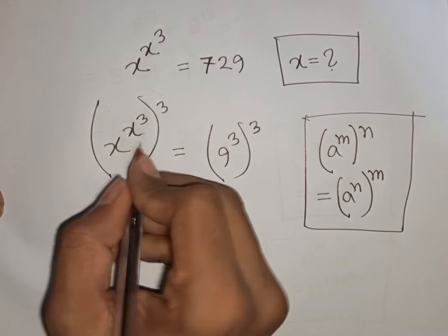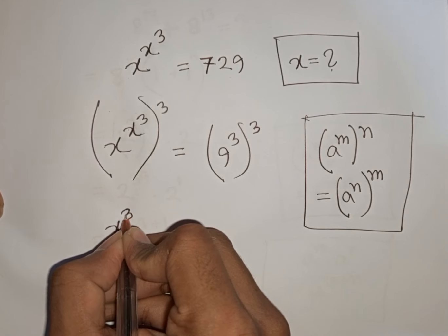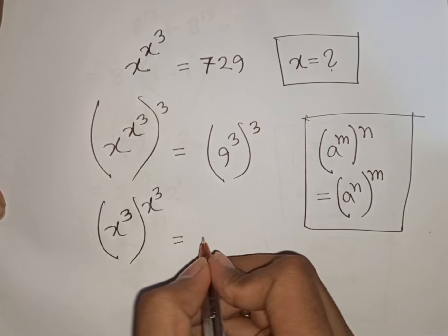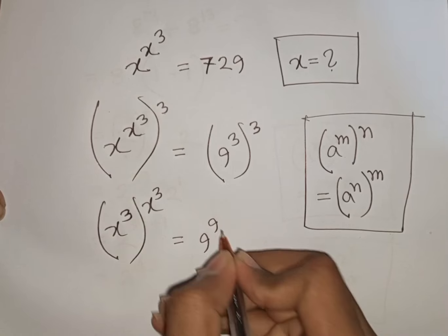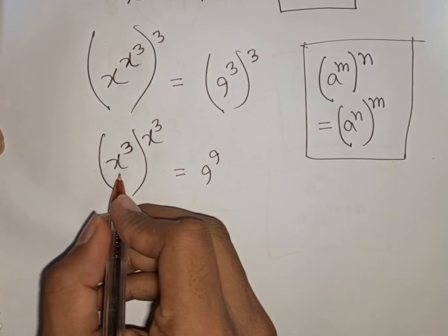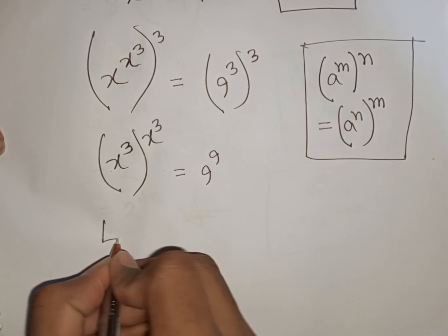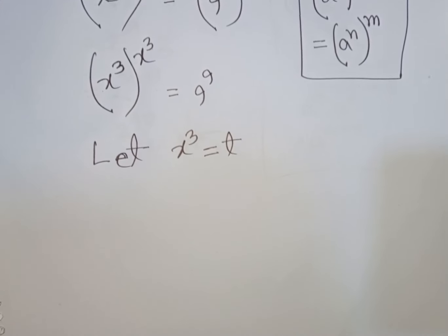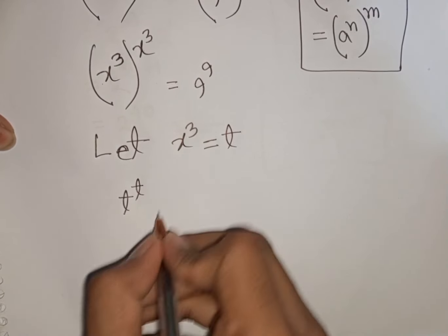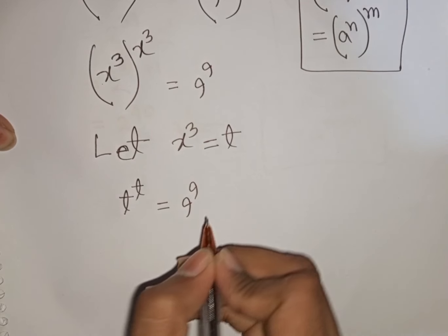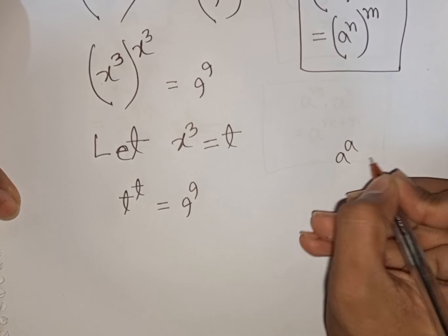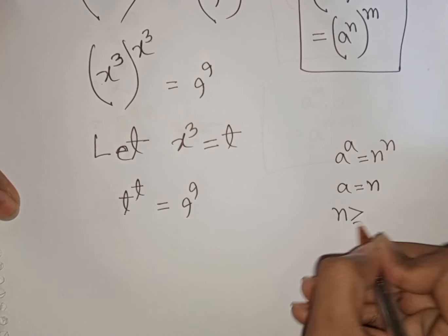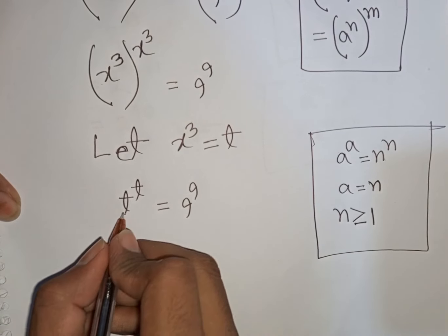According to this rule, we can rewrite the left side as x power 3, bracket power of x cubed, equals 9. Since x power 3 appears identically in both the base and exponent positions, we let t equal x power 3. Our equation becomes t power t equals 9 power 9. Applying the rule that if a power a equals n power n then a equals n, we get t equals 9.